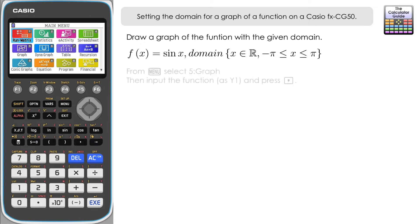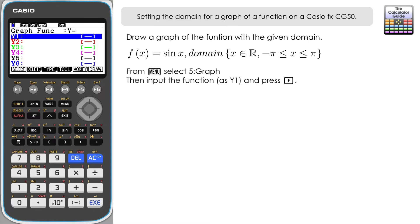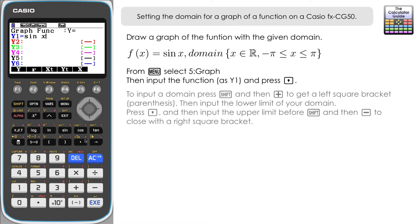We need to go to option 5 from the menu which is graph and we're going to input our graph at first. So our first function here is sine x. Now to be able to input a domain what we need to do is to press comma at first